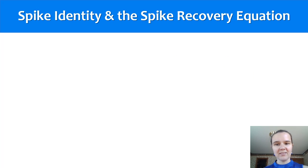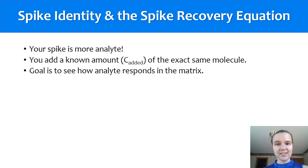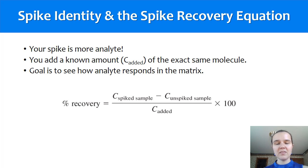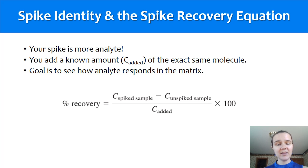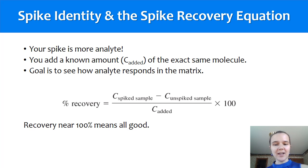The spike identity and the spike recovery equation: the spike is the analyte — you are using the exact same molecule as you're trying to analyze, and the goal overall is just to see how the analyte responds in the matrix of the sample. The equation for percent recovery is: the concentration of the spiked sample minus the concentration of the unspiked sample, over the amount that you added, times 100%. If all goes well you should get approximately 100% — you should measure as much as you put in.